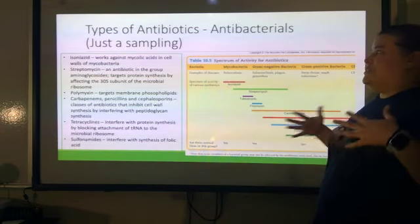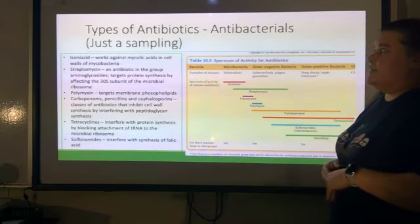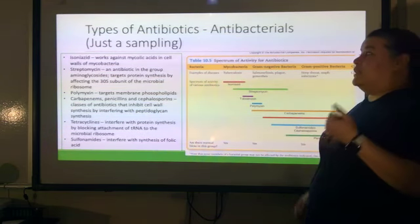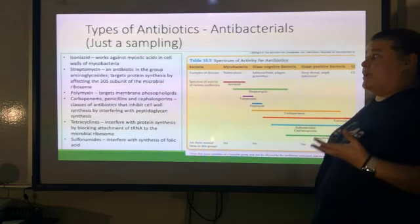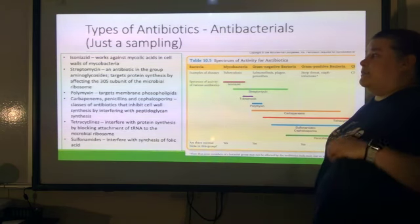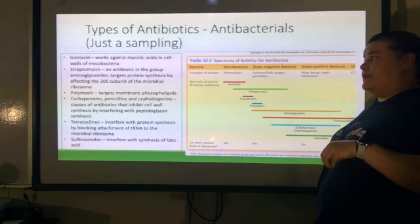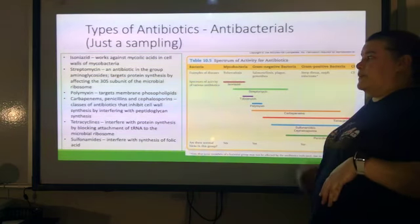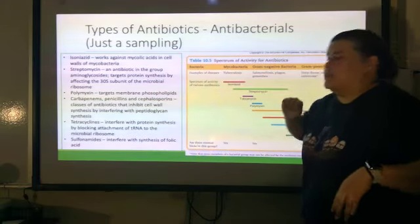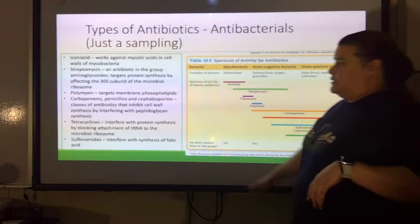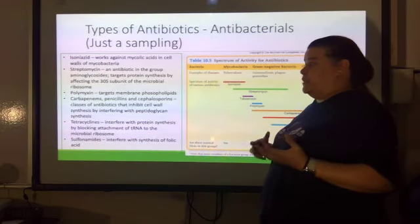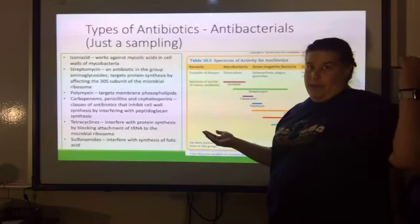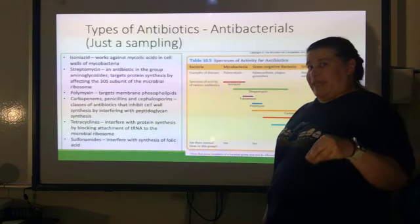Types of antibacterials: Isoniazid works against mycolic acids in the cell walls of mycobacteria. Streptomycin is an aminoglycoside that targets protein synthesis by affecting the 30S subunit of the microbial ribosome. Polymyxin targets the membrane phospholipids. Carbapenems, penicillins, and cyclosporins inhibit cell wall synthesis by interfering with peptidoglycan synthesis. Tetracyclines interfere with protein synthesis by blocking the attachment of tRNA to the microbial ribosome — if tRNA can't deliver the amino acid, you can't make a protein. Sulfonamides interfere with the synthesis of folic acid.